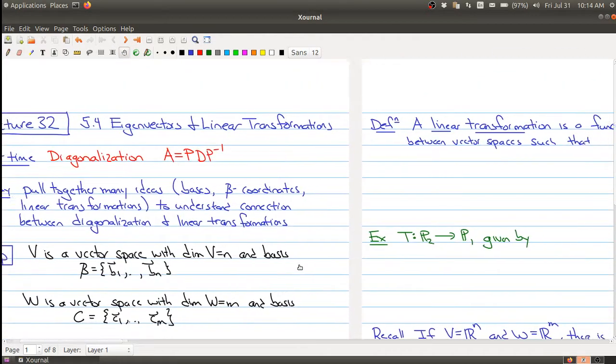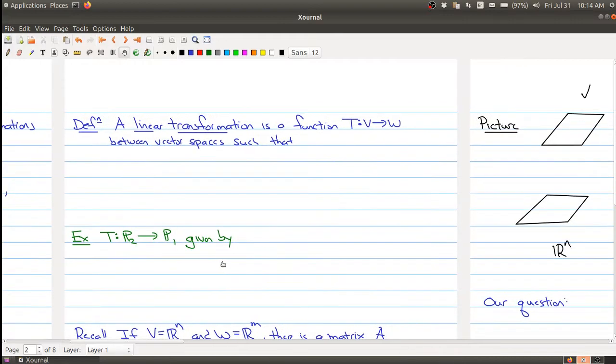Way back in chapter one we learned about a linear transformation from R^n to R^m, but what we would like is the notion for a linear transformation between arbitrary vector spaces. So a linear transformation